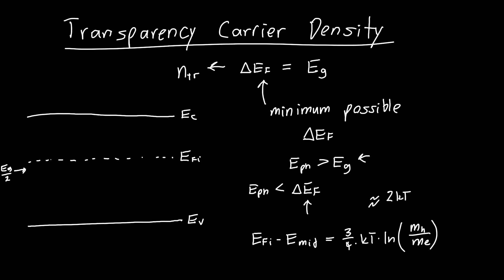In order for delta EF to be equal to our band gap, we need our valence band Fermi level to be roughly right here, so 2 kT above the valence band edge, and our conduction band Fermi level to be up here. If they were offset initially by about 2 kT, and we're using the Boltzmann approximation, then this separation is going to be about 2 kT.